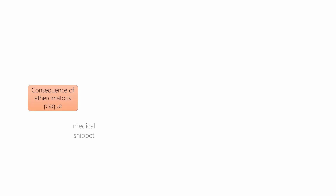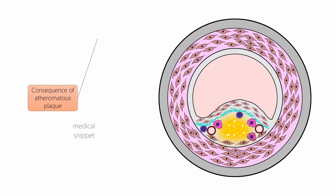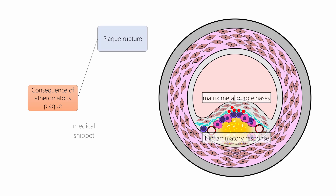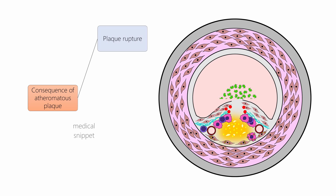What are the consequences of an atheromatous plaque? First is plaque rupture. When the inflammatory response is more intense, the cells secrete matrix metalloproteinases, which erode the fibrous cap of the plaque, causing plaque rupture. This exposes the highly thrombogenic lipid core, leading to platelet adhesion and aggregation stabilized by fibrin formation, thus causing thrombosis of the artery.